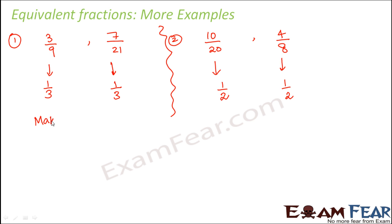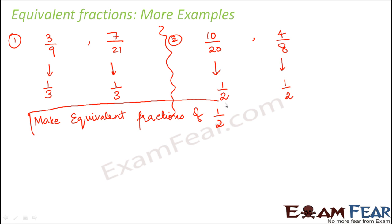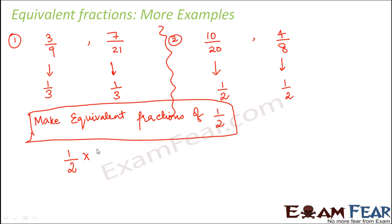Now let us see how we make equivalent fractions. If the task is to make equivalent fractions of 1 by 2, so this is the given fraction. If I multiply the numerator and the denominator by the same whole number, will that affect the fraction? No, because we are multiplying it to the numerator as well as to the denominator, so the value of the fraction remains unchanged.